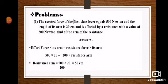Problem number one: the exerted force of a first class lever equals 500 Newtons, and the length of its arm is 20 centimeters. It is affected by a resistance of 200 Newtons. Find the arm of resistance. Using the law — effort force times its arm equals resistance force times its arm — the resistance arm equals 500 times 20 divided by 200, which equals 50 centimeters.